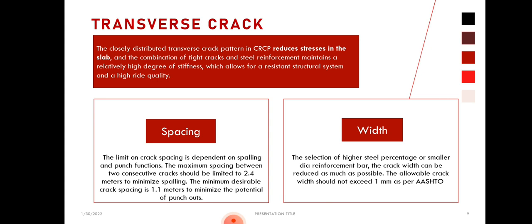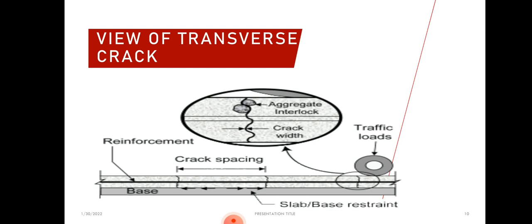Regarding width parameters, the crack width can be reduced by selecting a higher steel percentage or smaller diameter reinforcement bar. The allowable crack width should not exceed 1 mm per AASHTO. In the transverse crack view, aggregate interlocking holds the cracks and the distance between two cracks is the crack spacing, which results in a good load transfer mechanism.